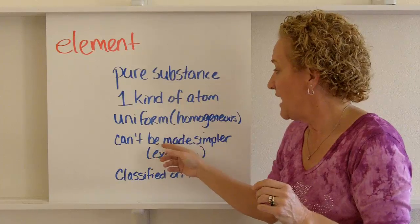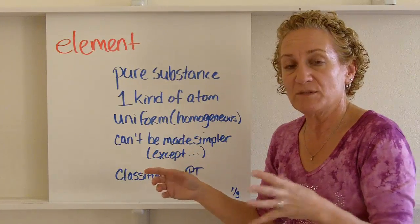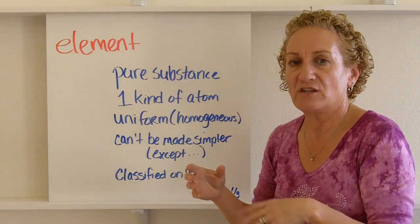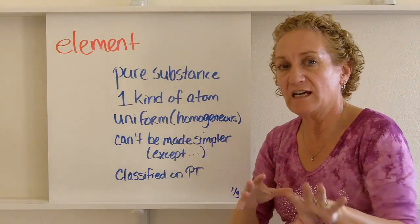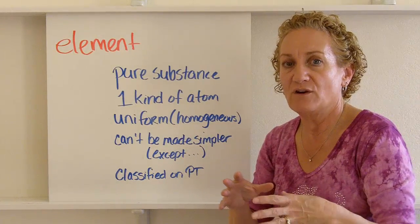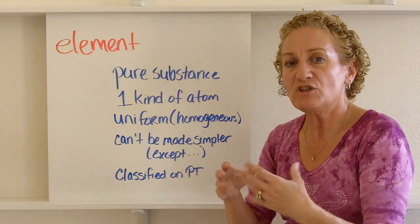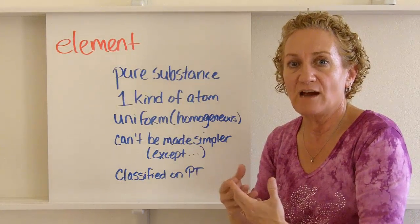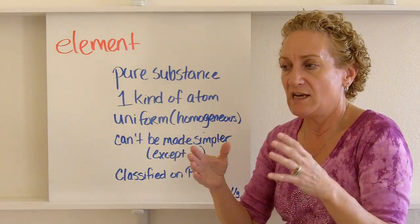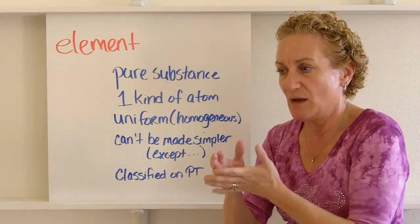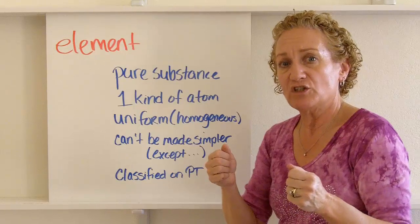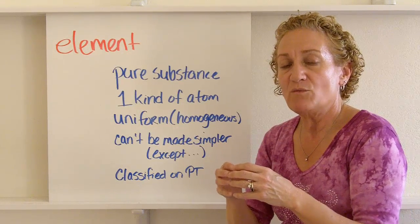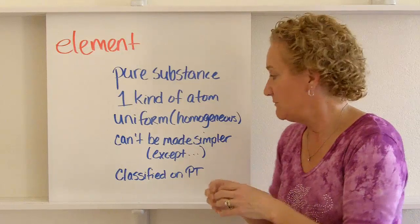An element cannot be made into a simpler substance — you can't break it down into something simpler, except with a nuclear reaction, which we're not going to address in this course. Basically, it's the simplest thing we break things down into. If you had a chunk and started chopping until you couldn't chop it anymore, the simplest thing left would be an element.